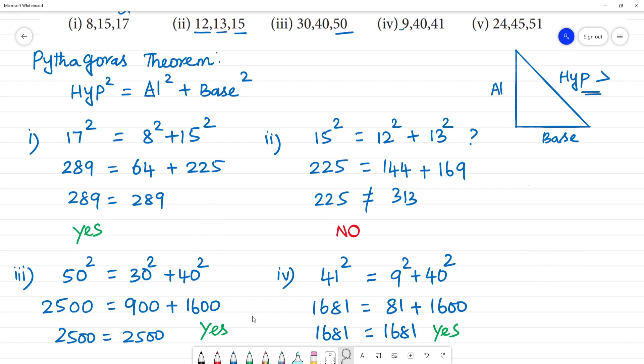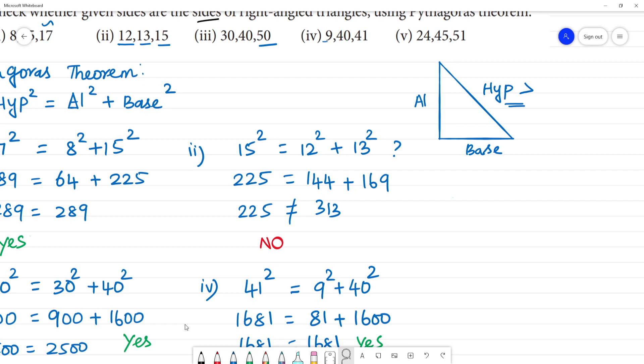Fifth one: 24, 45. Add them, we get 51. So 51 square, the greater side, will be equal to 24 square plus 45 square. 51 multiplied by 51: 1 times 1 is 1, 1 times 5 is 5, 5 times 5 is 25. This is 2601.